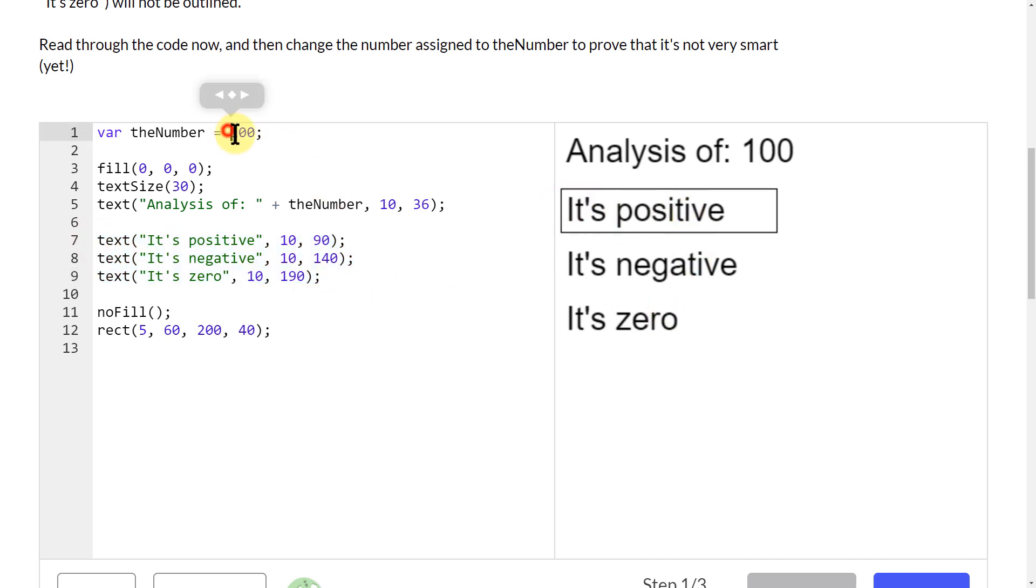We have this variable for the number, and it's currently 100. There's a rectangle surrounding the words 'it's positive.' But if we change this number and make it negative, the rectangle stays around 'it's positive' even when it's not actually true.